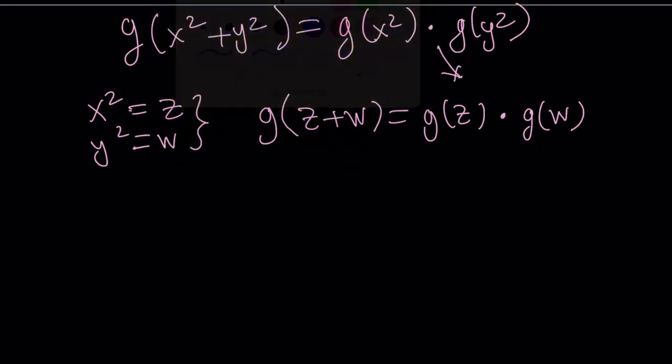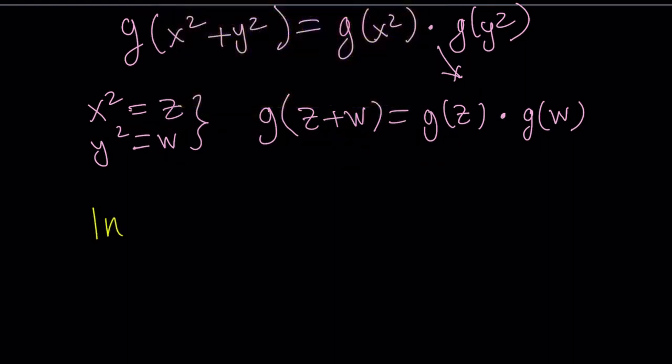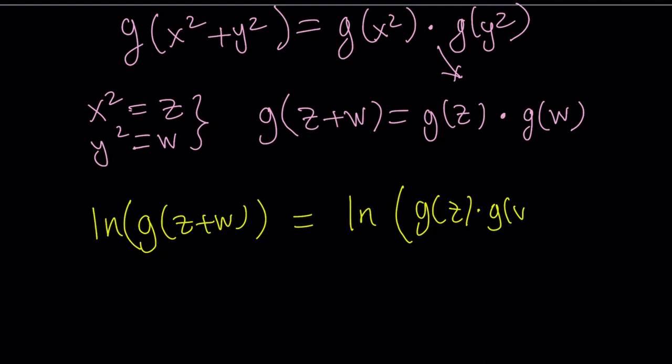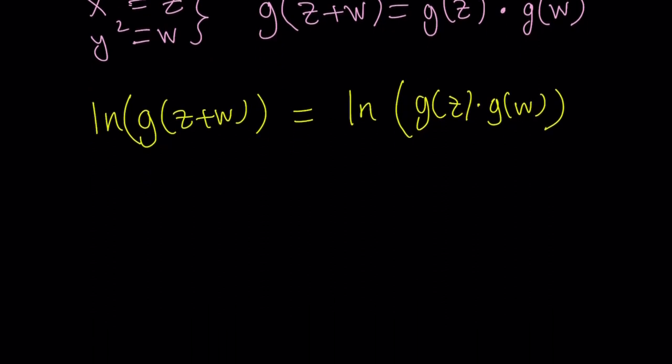So now I'm going to ln both sides. ln of g of z plus w. On the right-hand side, I have something nice. The right-hand side can be broken down because it's the ln of a product. So I can write it as ln of g z plus ln of g w. Properties of logs, how commonly they're used.